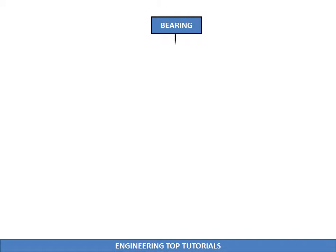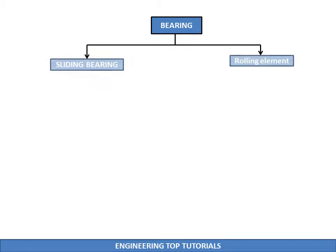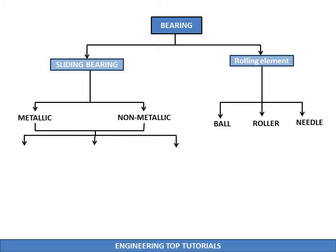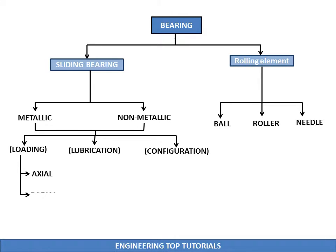Bearings are classified depending upon their shapes and sizes, and also according to the motions they allow and their load bearing capacities. There are many types of bearings, but the most common are roller bearings and ball bearings.